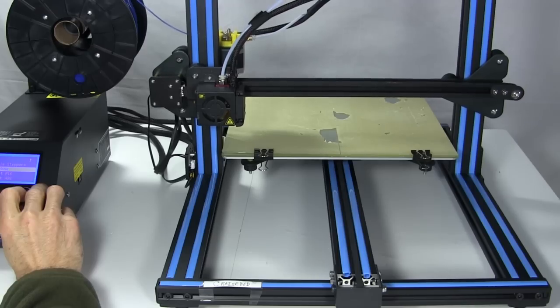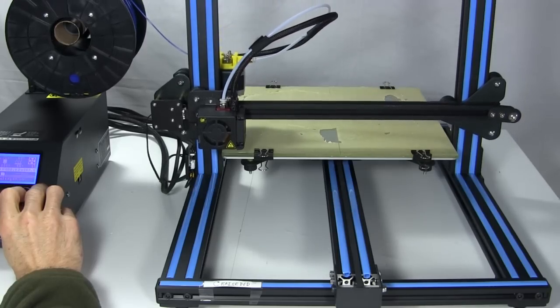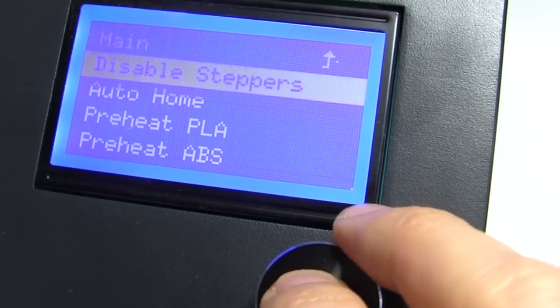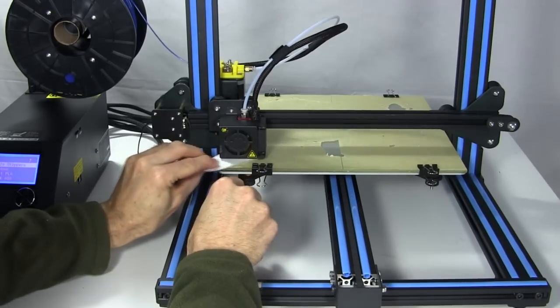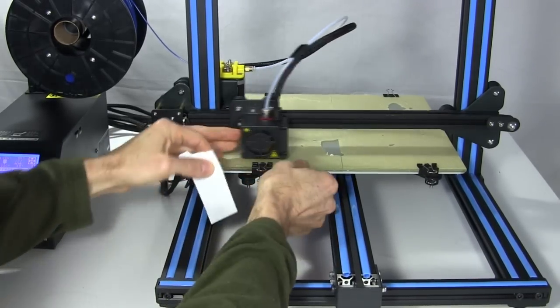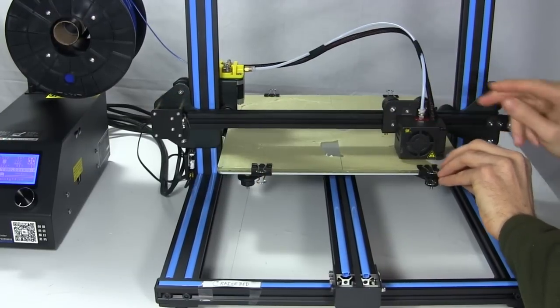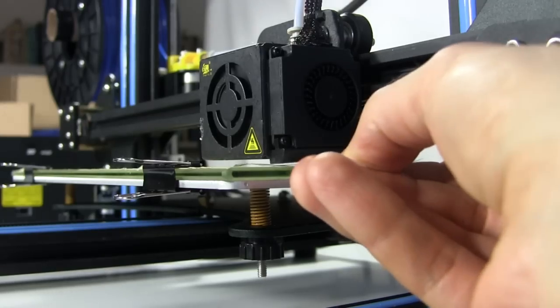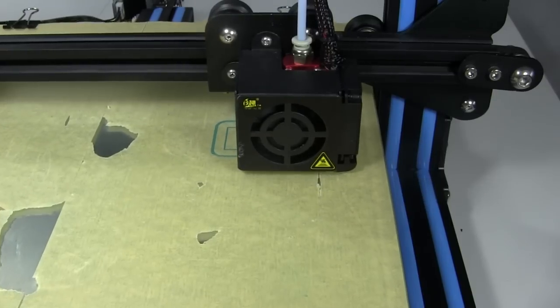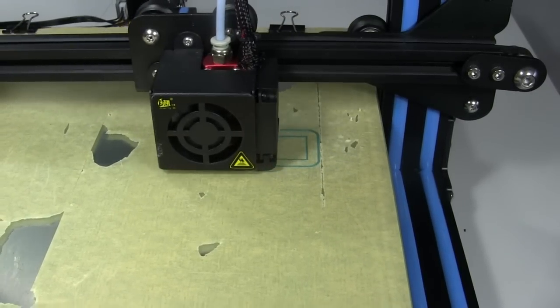Then I level the bed. I'll leave those details to the Tiny Machine 3D's video. But basically I'm making sure the bed is level and that the nozzle is so low that a piece of paper will barely slide between it and the bed. That means the first layer will be pushed into the bed and stick to it.